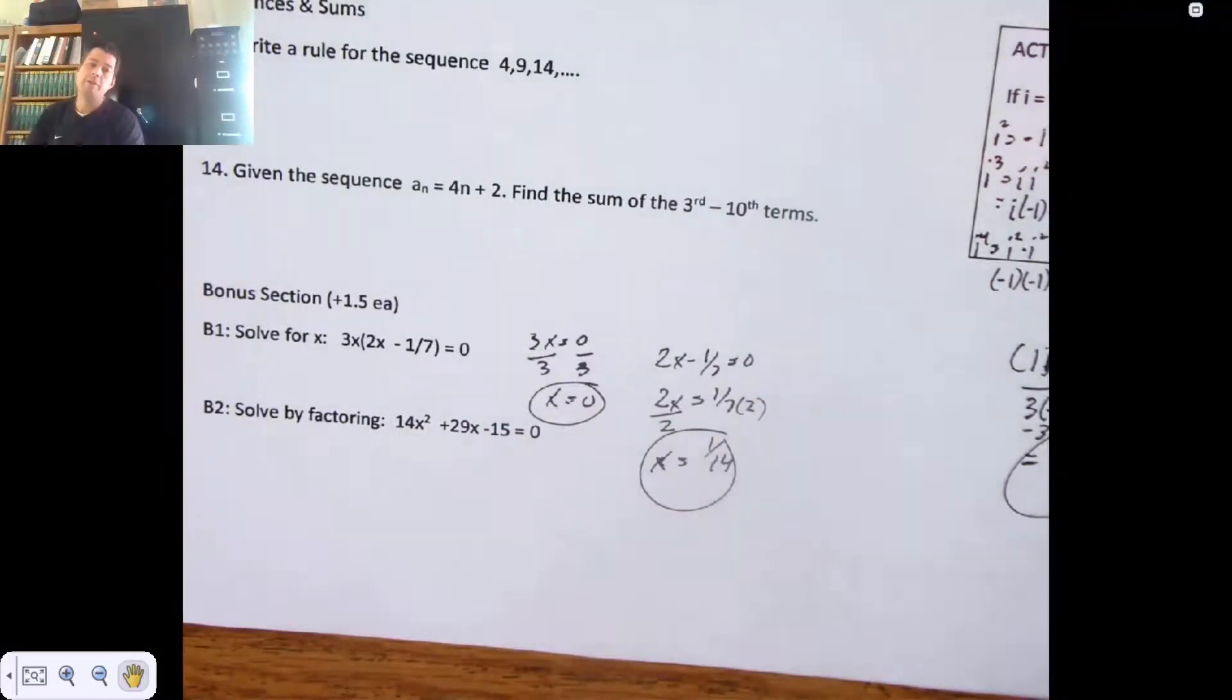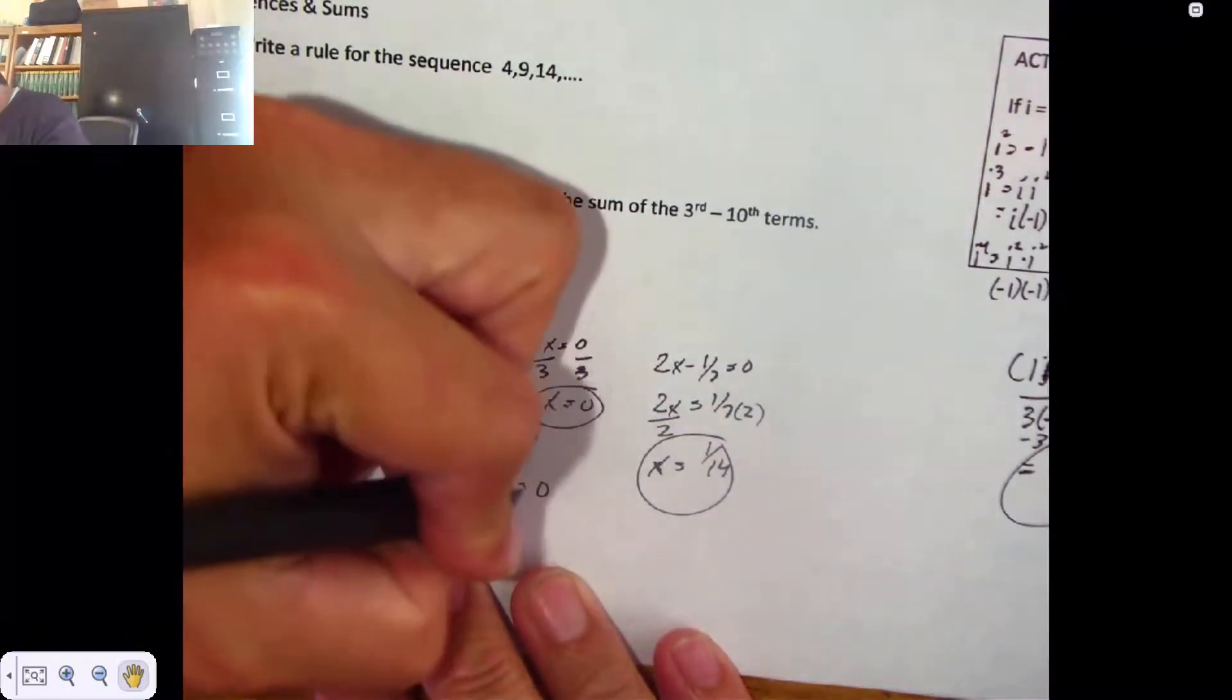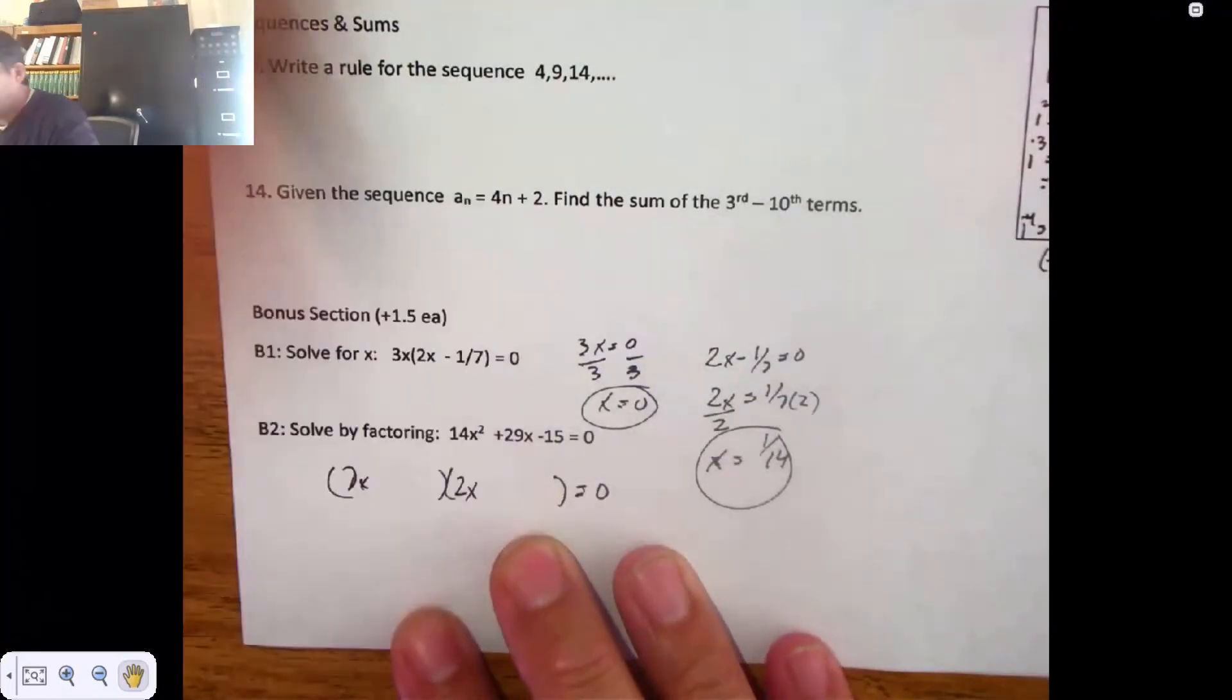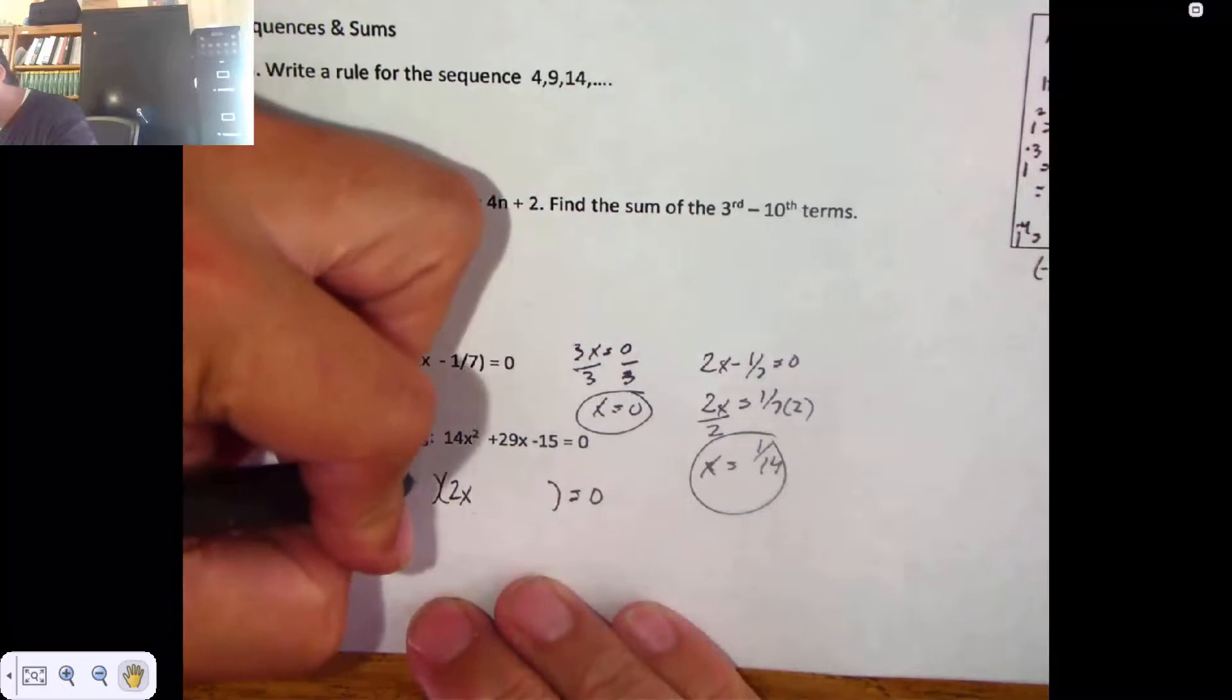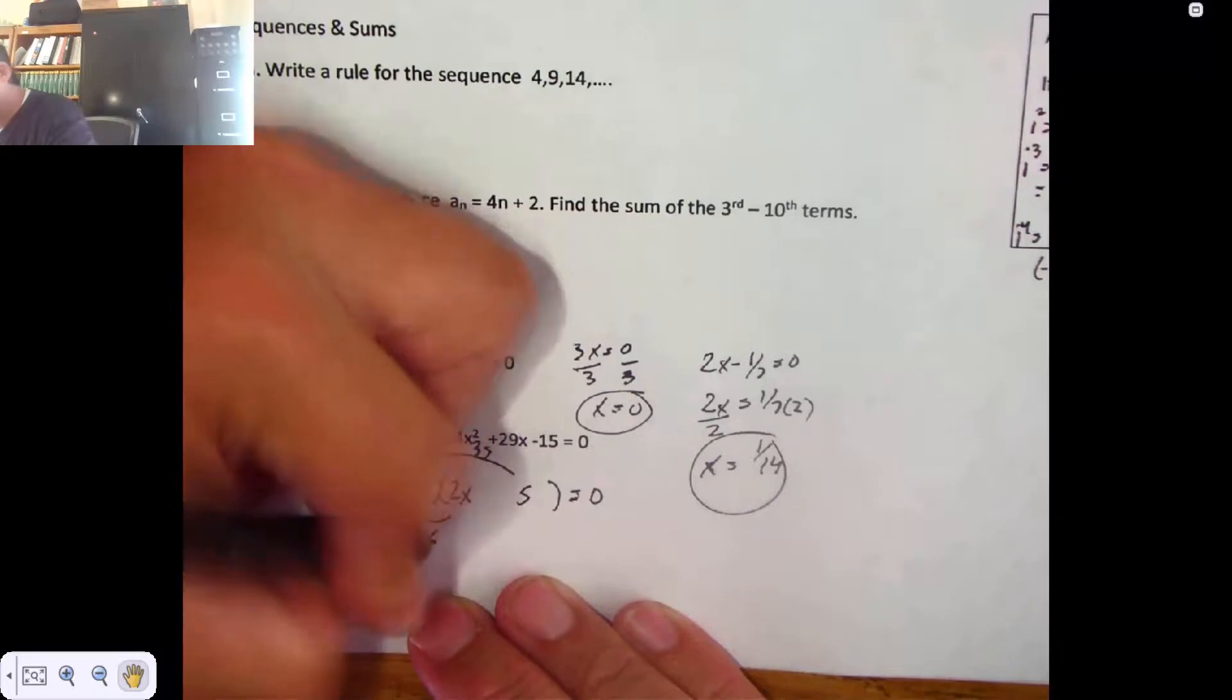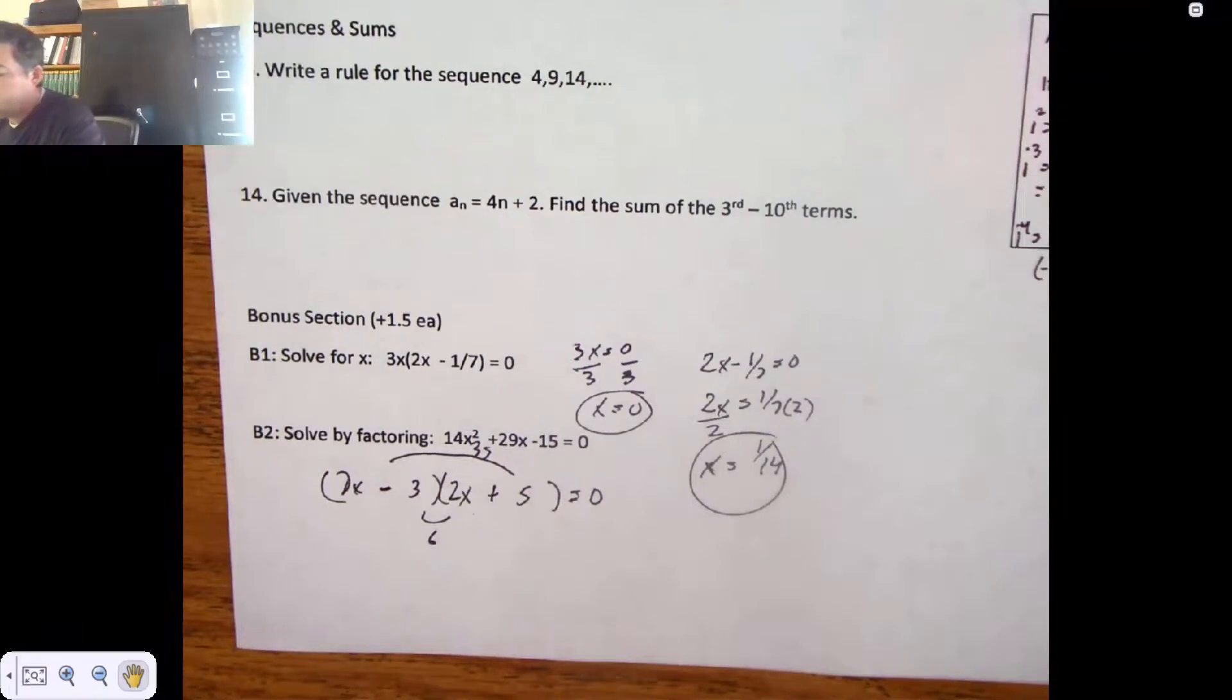Solved by factoring. 14 X squared plus 29 X minus 15 is nothing. It's been about two weeks since I made this problem up. So I have forgotten how I was supposed to factor it. But my gut says 7 X and 2 X. 15. My gut says 3 and 5. Fudge. Nope. Still there. 3 and 5. The outside makes 35. The inside makes 6. So if I add 35 and take away 6, I'm there. There's the factoring.